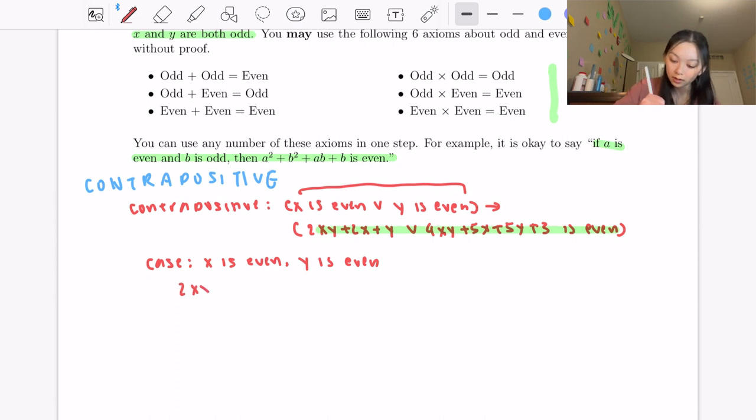So let's try out 2xy + 2x + y. For this equation we can notice that since we have 2s here, these first two terms will always equal to an even, and since y is even, this is going to be even. So we've shown that either 2xy + 2x + y or 4xy + 5x + 5y + 3 is even.